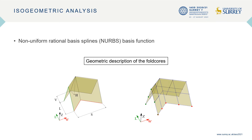It is illustrated how you can create a fold core with NURBS surface descriptions. On the left, you see how we would normally do it: we just have a set of parameters which describes how the fold core is built up in L and W direction. This is a single unit cell which is then repeated in both directions to create the whole fold core.